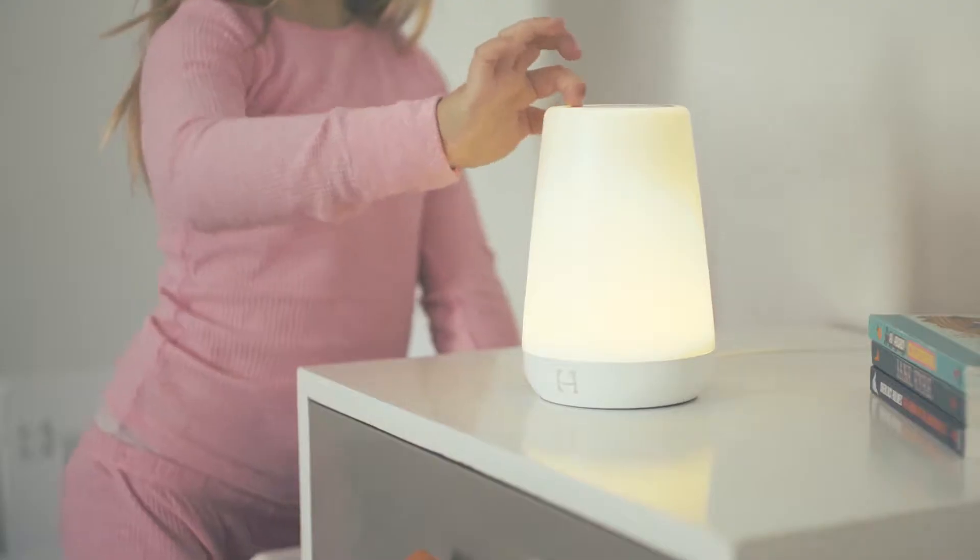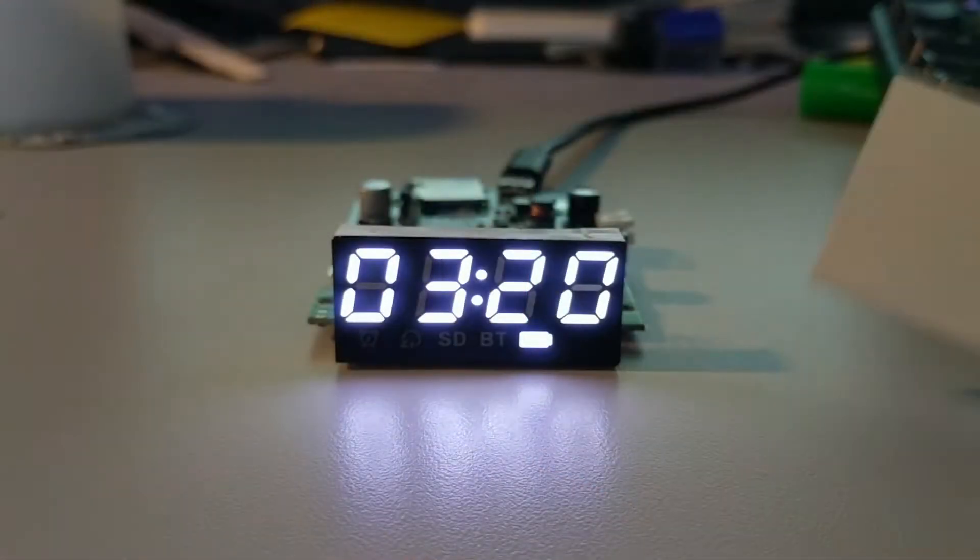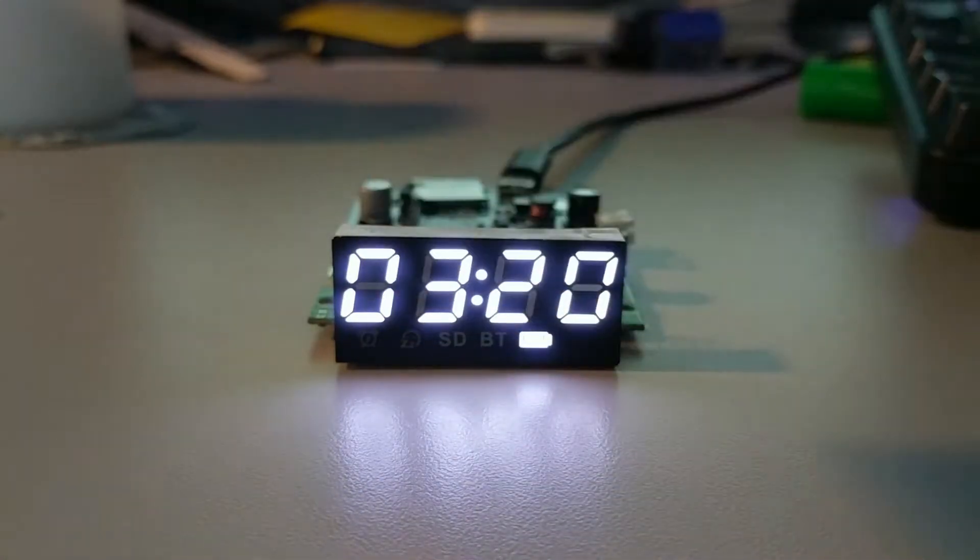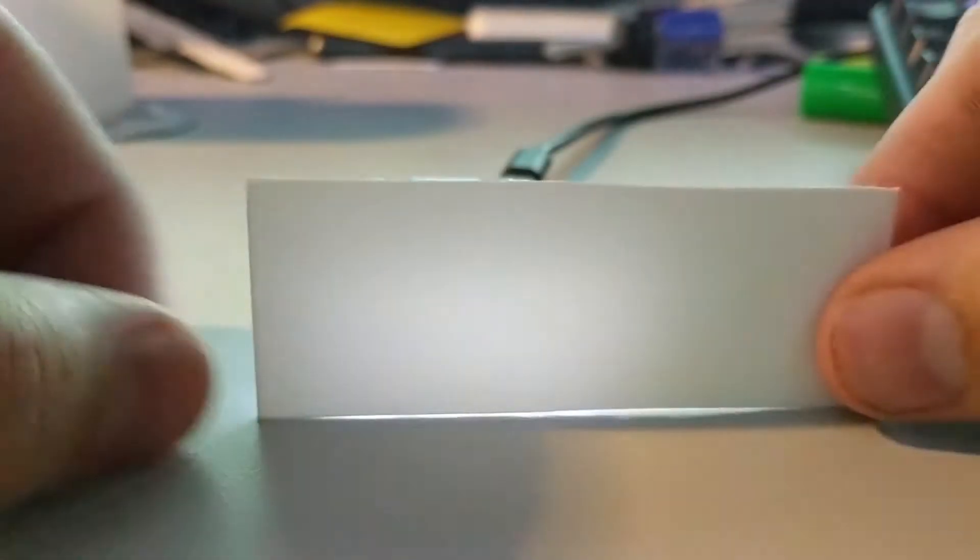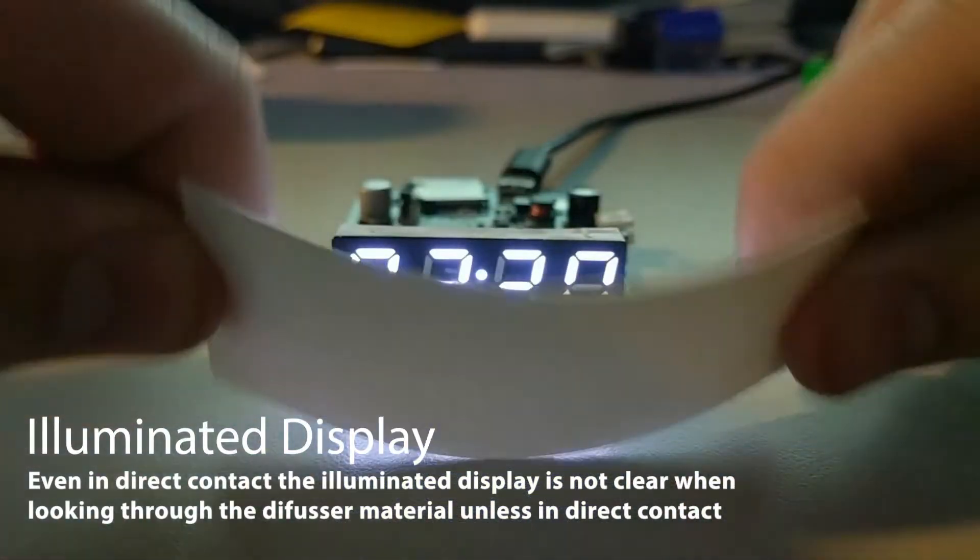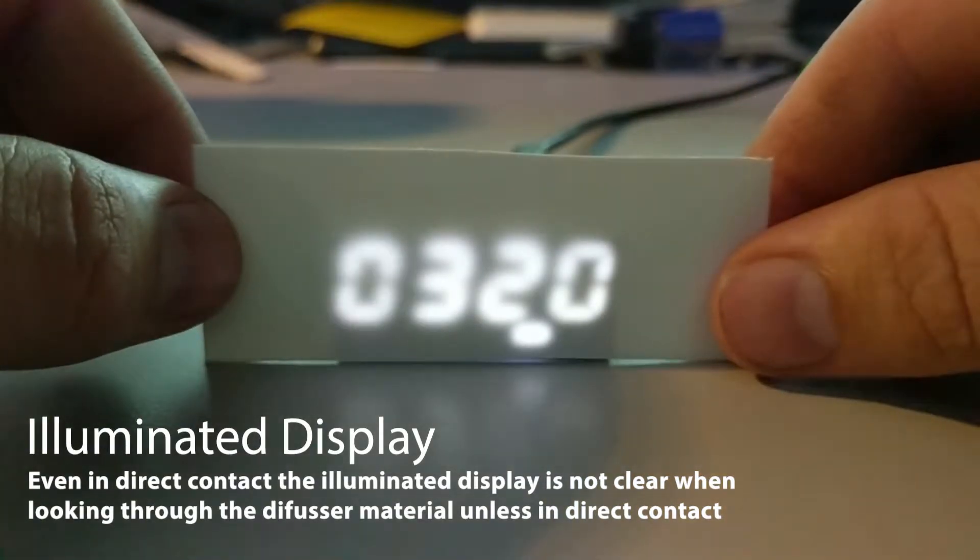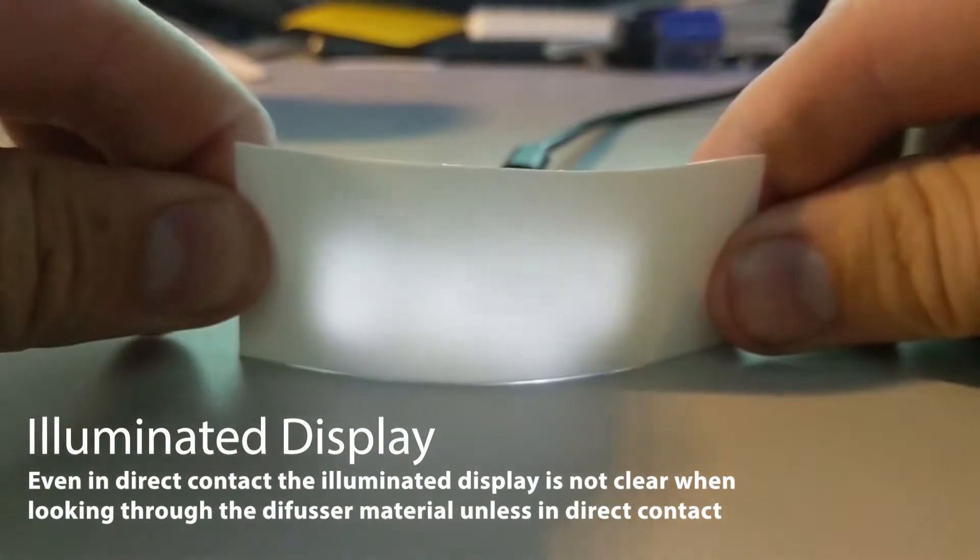To incorporate a hidden clock, we began testing different technologies, material opacity, and light sources. By shining an LED through a thin opaque section, we learned that the LED display must be in direct contact with the surface of the diffuser material for the display to be clearly visible.